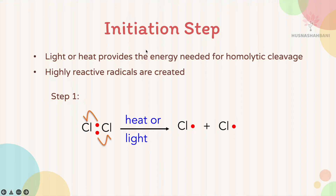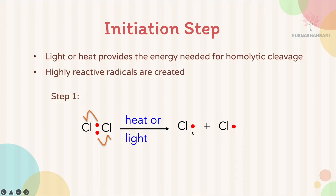In the initiation step, light or heat provides the energy needed for homolytic cleavage of the diatomic molecule of Cl or Br. Highly reactive radicals are created. There is only one step in the initiation step, which is homolytic cleavage. The bond between Cl atoms — one bond consisting of two electrons — breaks symmetrically to form Cl free radicals.